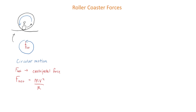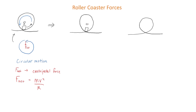Where m is the mass of the object, v is the object's speed, and r is the radius of the circle. Now I want to focus on two specific points: when the rider is at the bottom of the loop and when the rider is at the top of the loop.